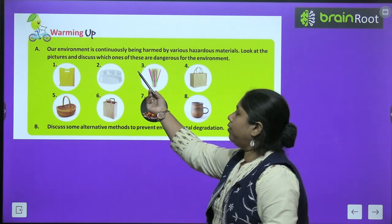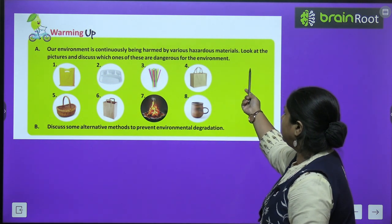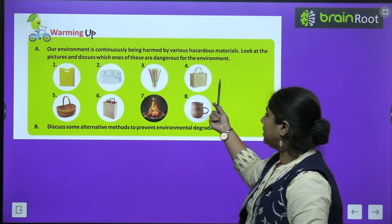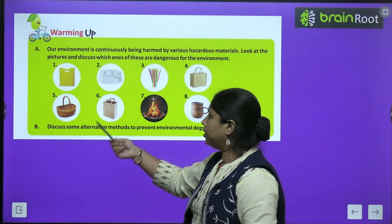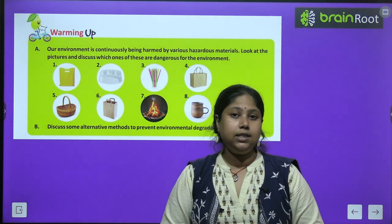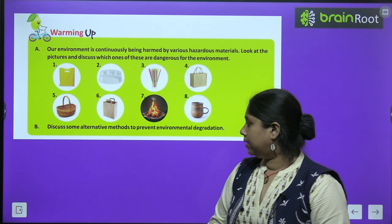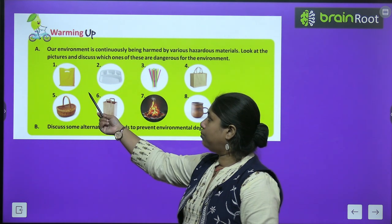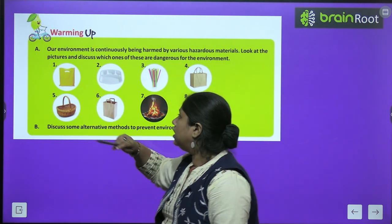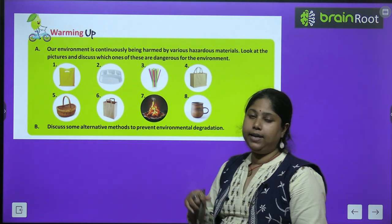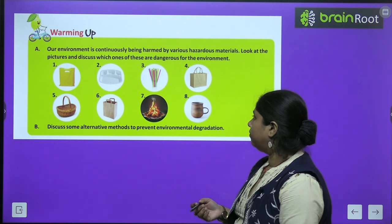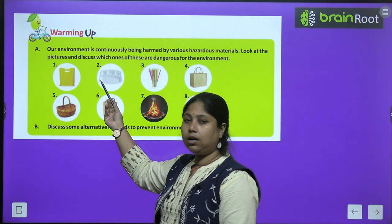Warming up — our environment is continuously being harmed by various hideous materials. Look at the pictures and discuss which of these are dangerous for the environment. यहाँ कुछ pictures दी हुई हैं — हमें find out करना है कि कौन से elements harmful हैं। If we see, the first is a poly bag — it is harmful. The second one is a thermocol plate — this is also harmful, though comparatively थोड़ा कम है।